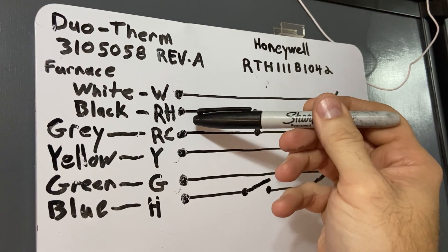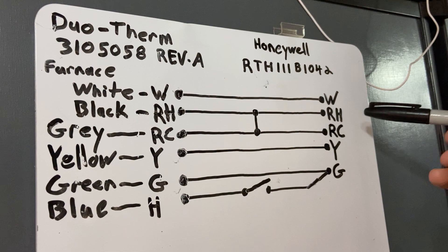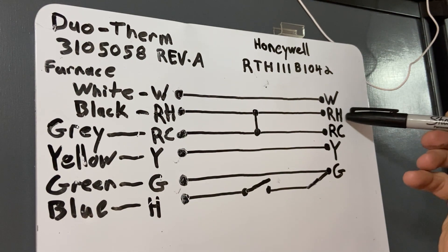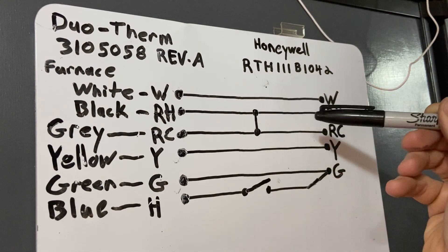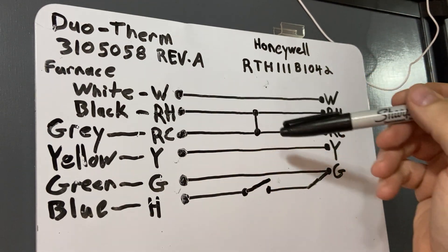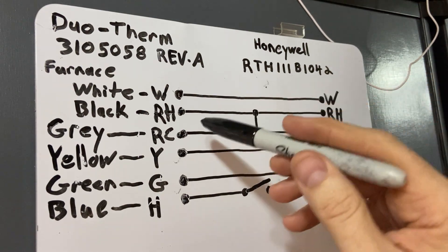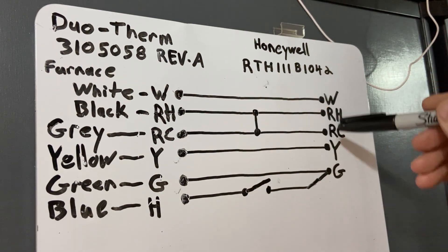The black for the furnace, the gray for the air conditioner. They have to be tied together, whether you jumper it at one end or the other, or just tie all four wires together, doesn't matter, as long as these two are connected to these two.